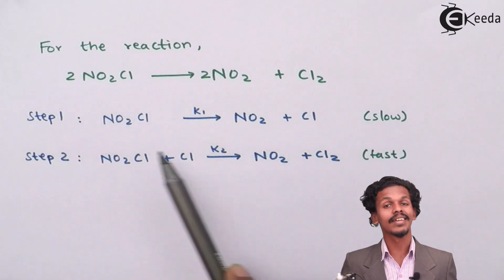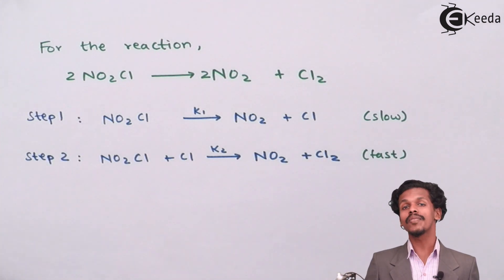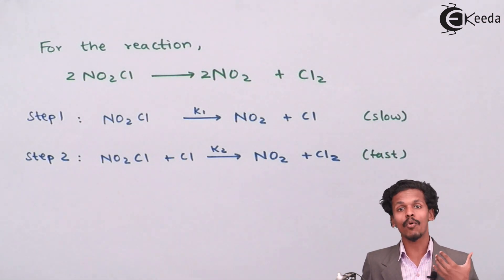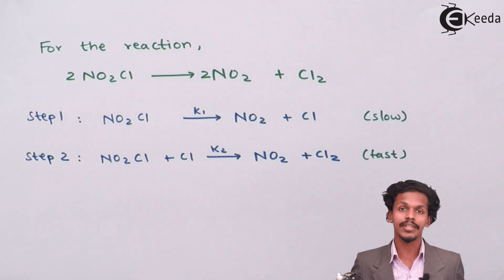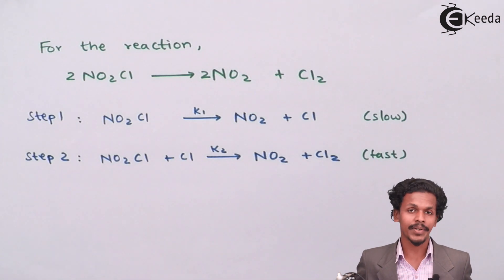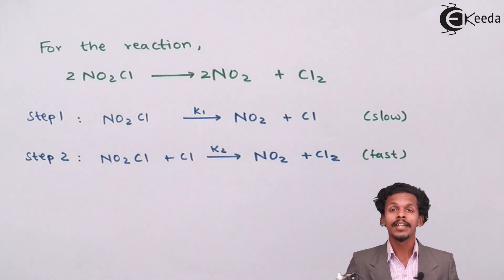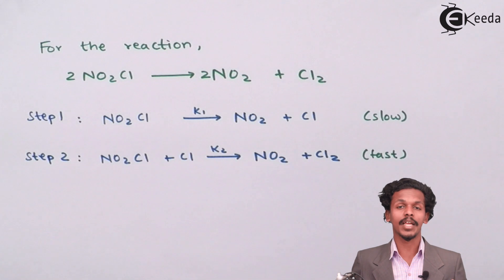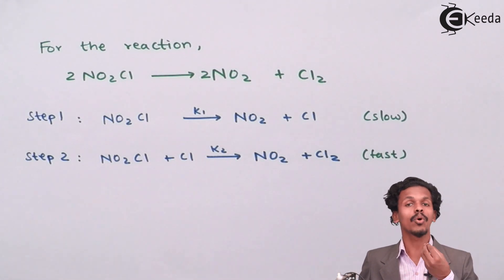So therefore since it is the slowest step among all these two reaction steps, it is said to be the rate determining step. And because of this only we could estimate what would be the rate of reaction of this overall reaction. And let me tell you one thing that the rate determining step is for an elementary reaction and it cannot be said to be for the overall reaction.